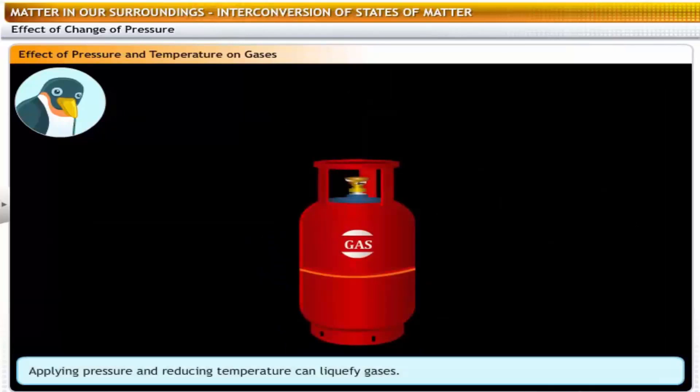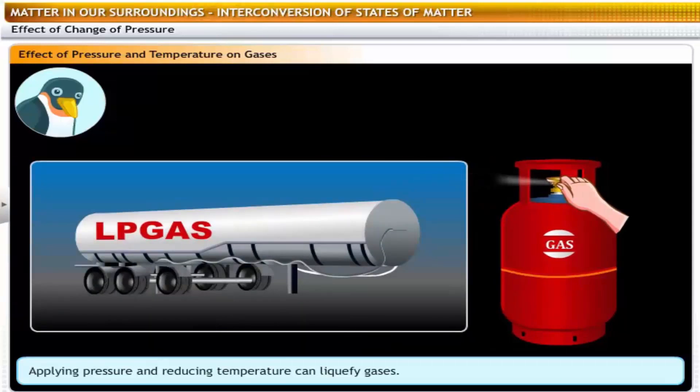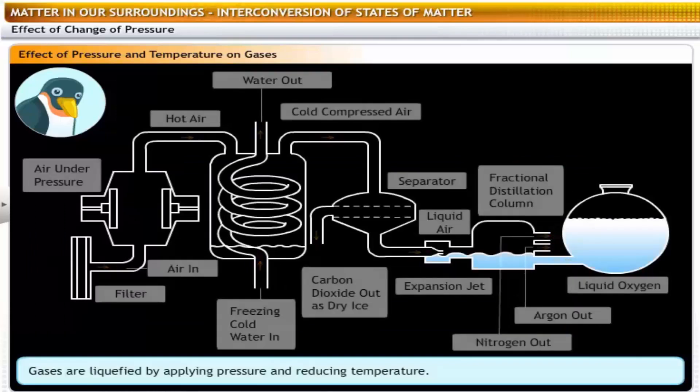Now let us see the effect of pressure on the interconversion of the states of matter. You know that gas gushes out with a hissing sound when you open the knob of a domestic gas cylinder. In a domestic cylinder, the gas is compressed at a high pressure and a low temperature and is stored in the form of liquid petroleum gas. When the knob is opened, the pressure is released and the gas gushes out. However, this is possible only in gases because gases can be compressed. Gases can be liquefied by increasing pressure and lowering temperature. This principle is used in the liquefaction of air to separate the components of air.